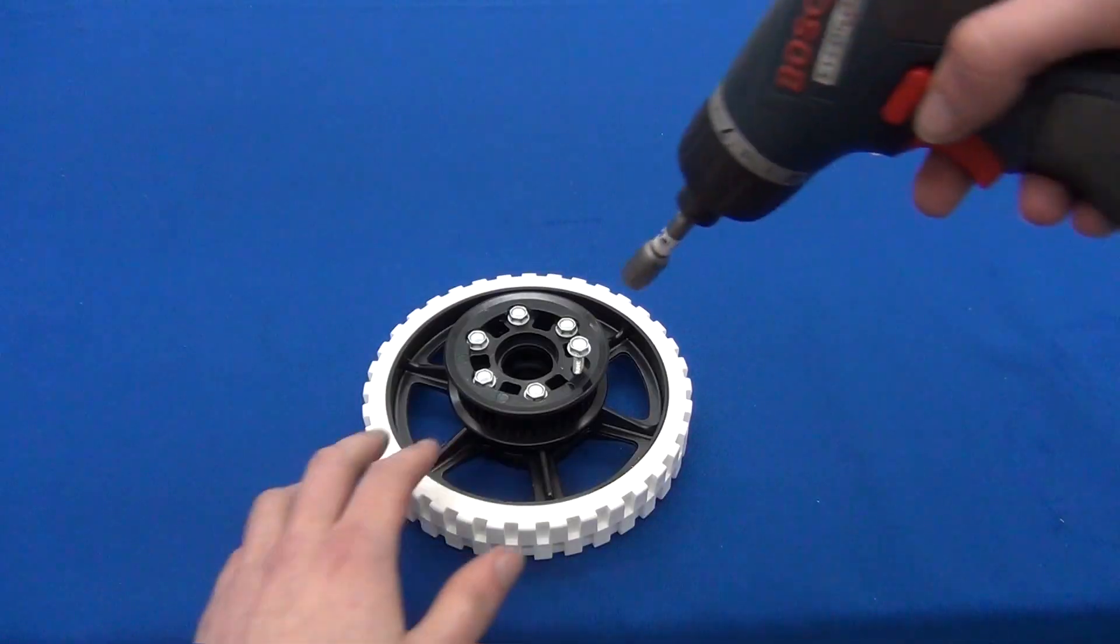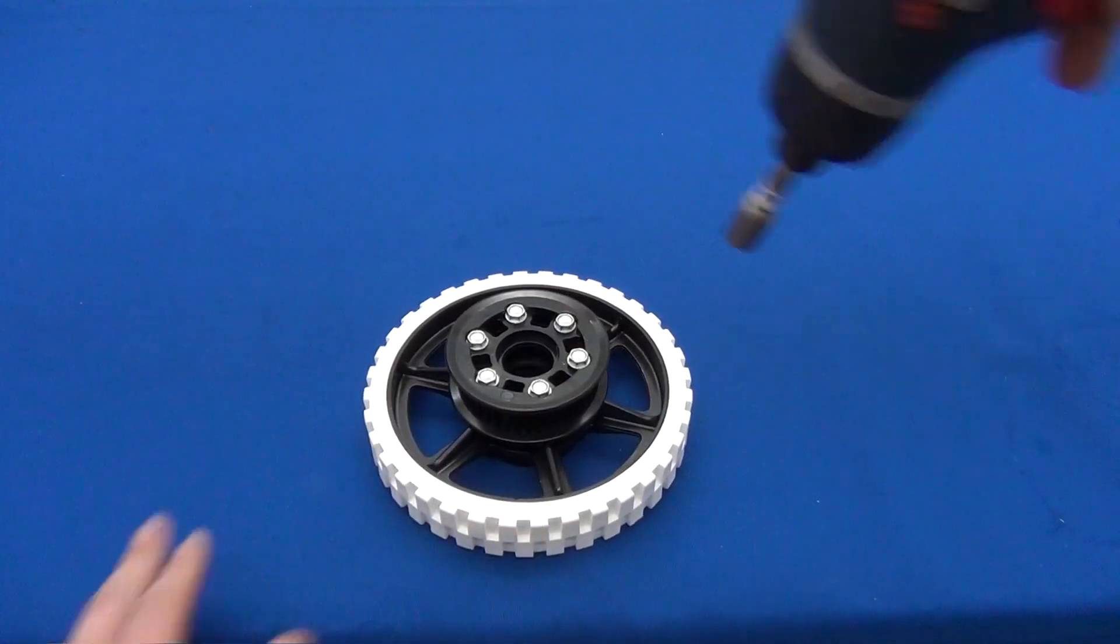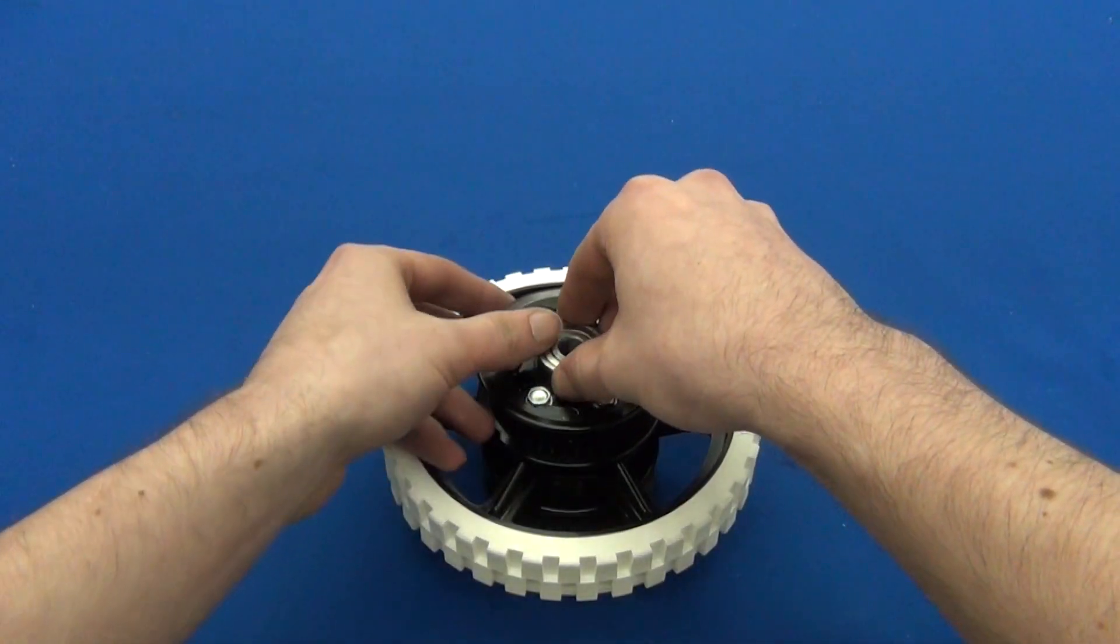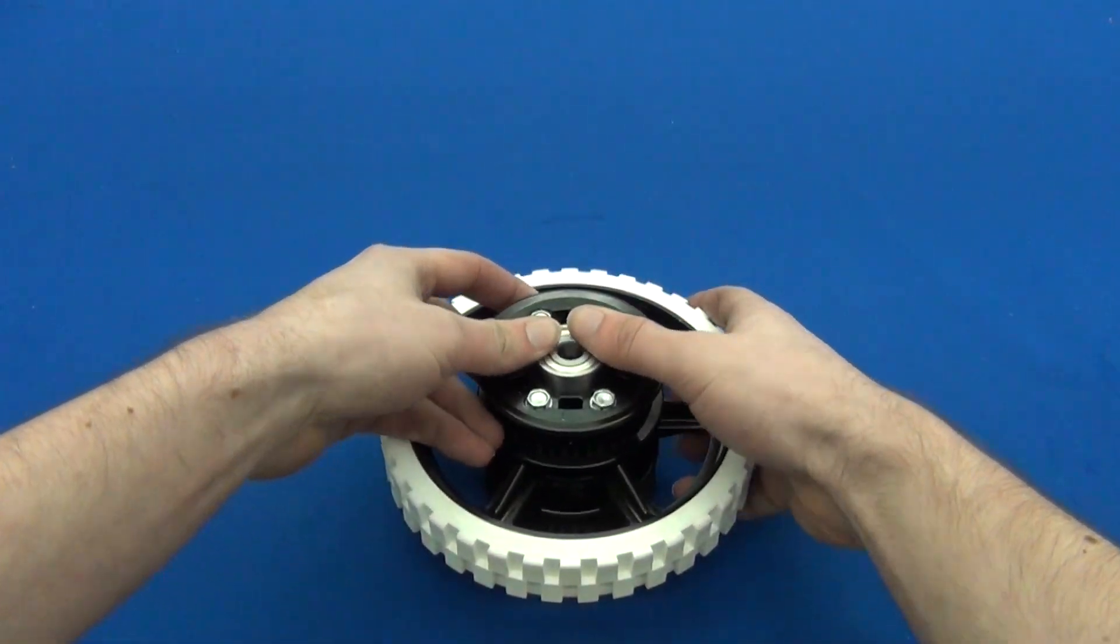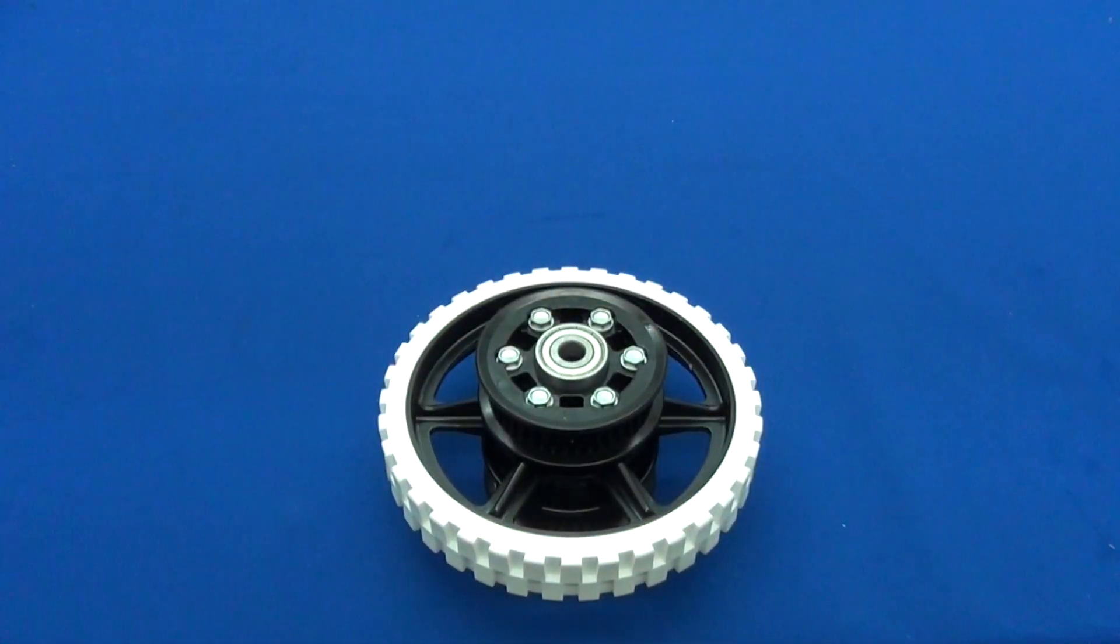Using the short thread forming screws, attach two pulley halves to each of the outside wheels and four pulley halves to the center wheels. After attaching the pulley halves to the wheels, press in bearings to both sides of the assembly.